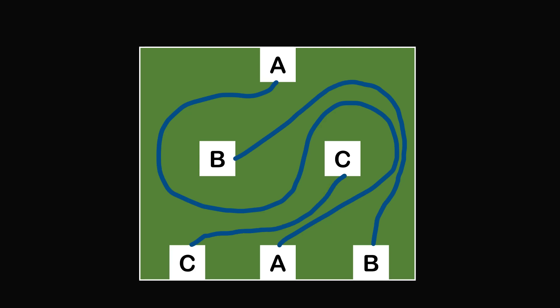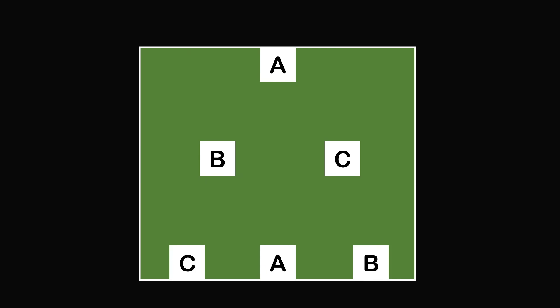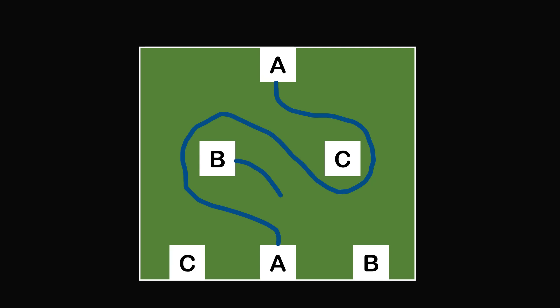So this is one way to solve the problem. You could also go around the other way — connect the boxes labeled A by first going around C and then B, and then it will be easy to connect the boxes labeled B and C. These are two ways to solve this puzzle.